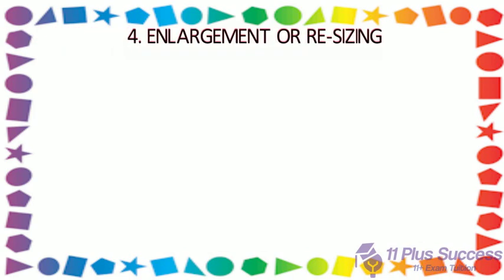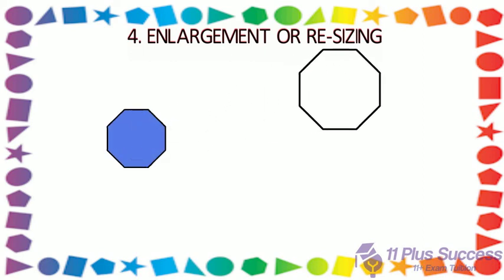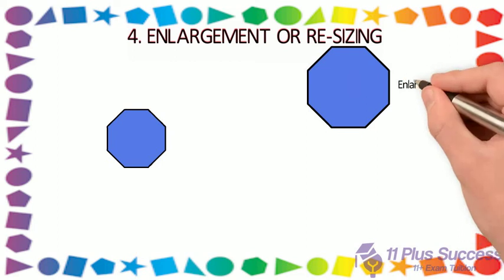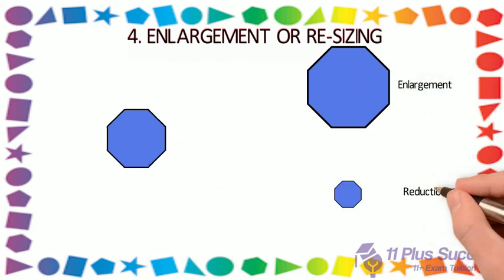4. Enlargement or resizing. This involves resizing of the object. It could result in an increase in size (enlargement) or a decrease in size (reduction). When you resize a shape, it gets bigger or smaller, but it still looks similar.